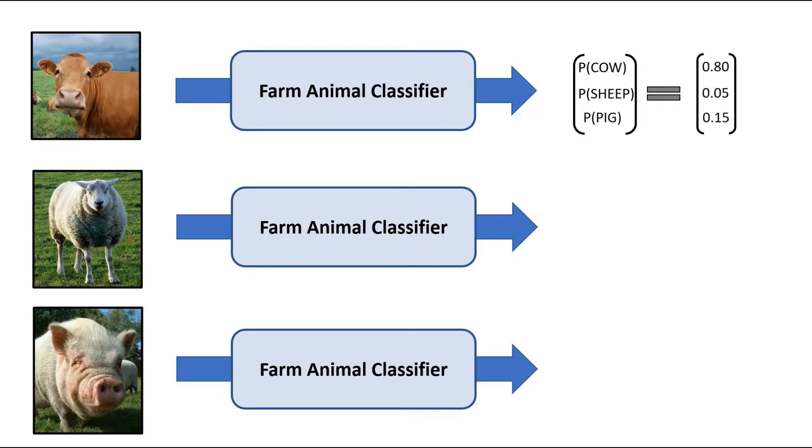In this example, the model assigns a probability of 0.8 of the image being a cow, 0.05 of being a sheep, and 0.15 of being a pig. So the natural conclusion is that the image is a cow because it has the greatest probability assigned to it.